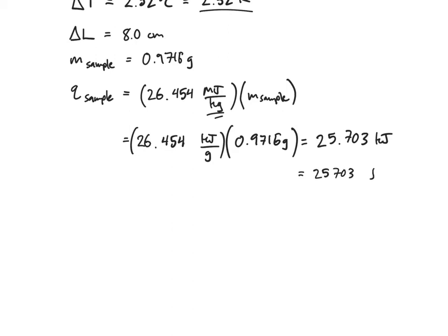25,703 joules of heat released by my benzoic acid pellet. Next I'll need the amount of heat released by the combustion of the wire, and that's going to be equal to delta L times 9.6 joules per centimeter.